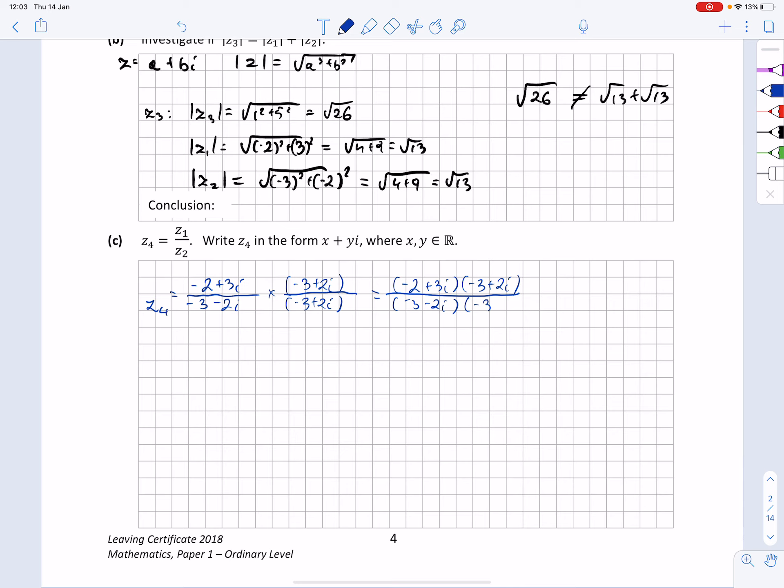This will give me a result above the line: minus 2 by minus 3 is plus 6, minus 2 by plus 2i is minus 4i, plus 3i by minus 3 is minus 9i, and last but not least, plus 3i by plus 2i is plus 6i squared. And below the line, I'm using the difference of squares formula to write this as 9 minus 4i squared.